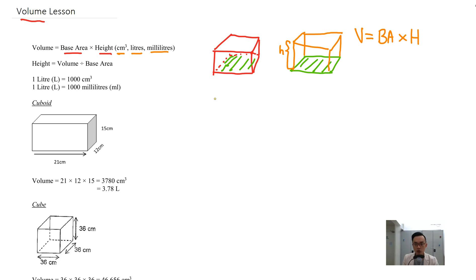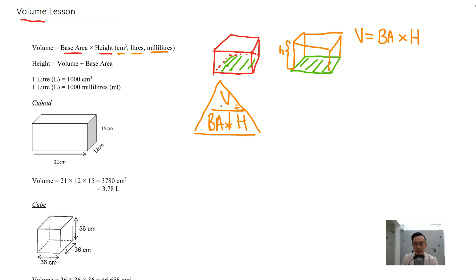There's another triangle that you need to learn for volume, which has three parts: volume, base area, and height. This is another triangle that you have to learn — it's very, very important. As usual, the bottom two multiplied together gives you the top. This divided by this gives you this, and this divided by base area gives you height.